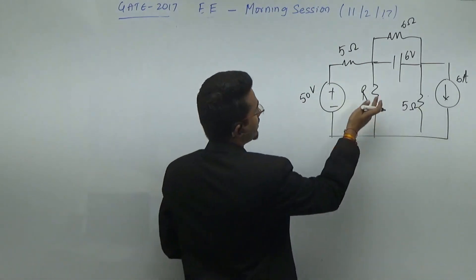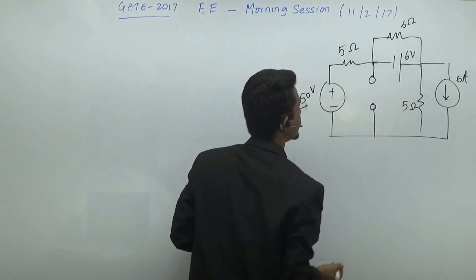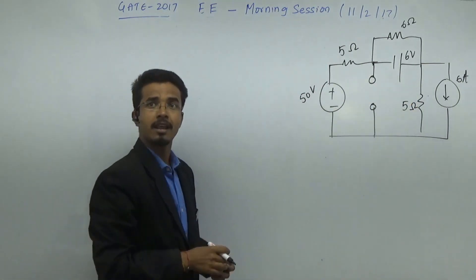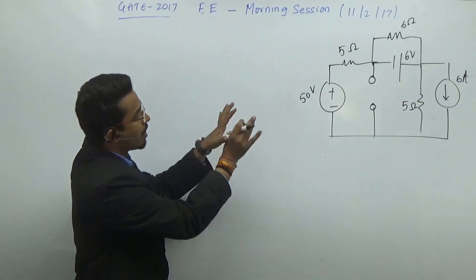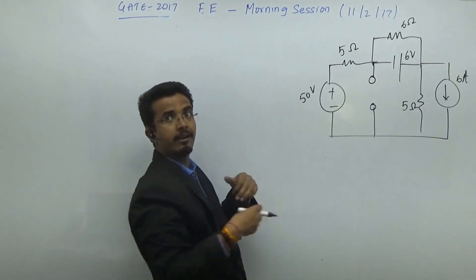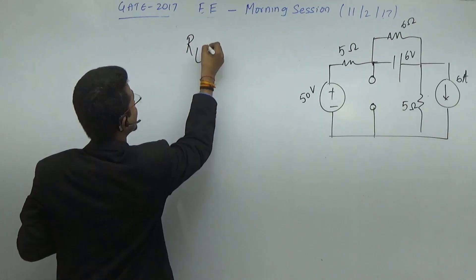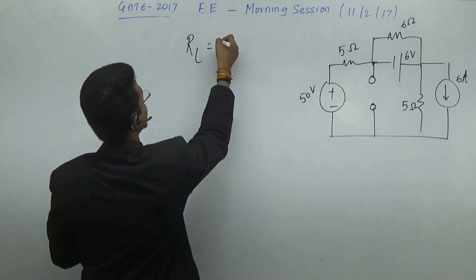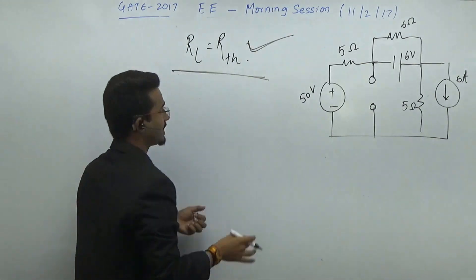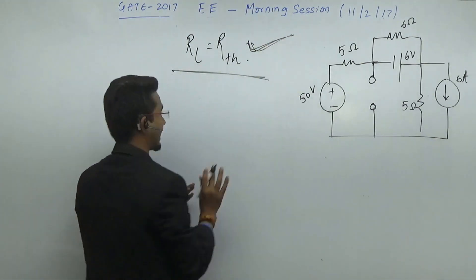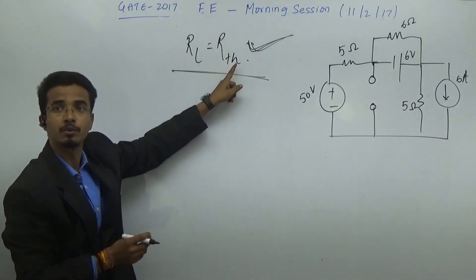The first thing is to remove this source, and calculate the value of the open-circuited voltage, as well as what is the resistance seen from here. Because all the network is resistive, the maximum power transfer theorem tells us: if you want to transfer the power from source to load at maximum, you have to choose the value of RL such that it should be equal to RTH.